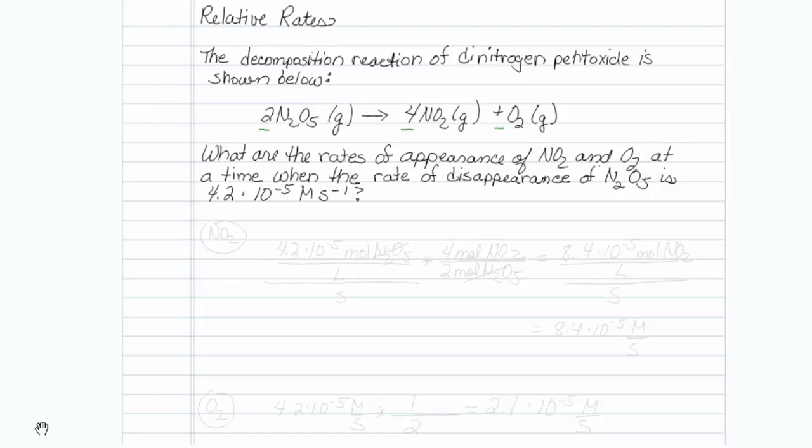So if I want to do NO2 and determine its rate, remember I'm given the information 4.2 times 10 to the minus 5th, and let me write it very specifically now. This would be moles of N2O5 per liter of volume, also over the time, which is seconds.